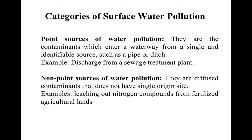First are point sources — contaminants which enter a waterway via a definable and identifiable source like a pipe or ditch. This includes discharge from sewage treatment plants as one example. Second are non-point sources — diffused contaminants that don't have a single origin site. Examples include leaching of nitrogen compounds from fertilized agricultural land, or nutrient runoff and storm water from agricultural fields or forests.